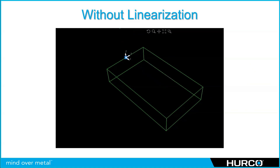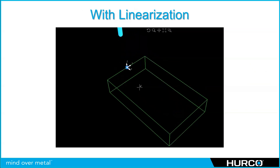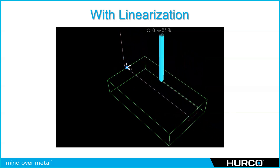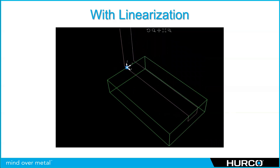With the same programmed move but linearization turned on, you can see it goes to the edge, rotates correctly into position, goes over, comes back up, and then ends. We're eliminating that gouge because we're controlling the tool tip throughout the entire movement of the programmed path.